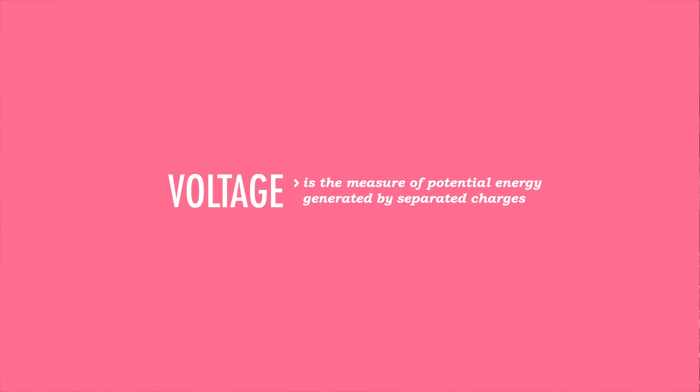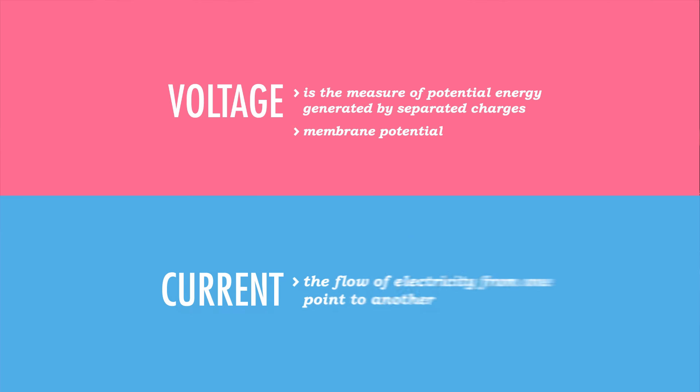It might help to think of your neurons in the same terms an electrician might use. Voltage, for example, is the measure of potential energy generated by separated charges. It's measured in volts, but in the case of your body, we use millivolts, because it's a pretty small amount. In a cell, we refer to this difference in charge as the membrane potential. The bigger the difference between the positive and negative areas, the higher the voltage and the larger the potential. And just like there's voltage in your body, there's also current — the flow of electricity from one point to another. The amount of charge in a current is related both to its voltage and its resistance.